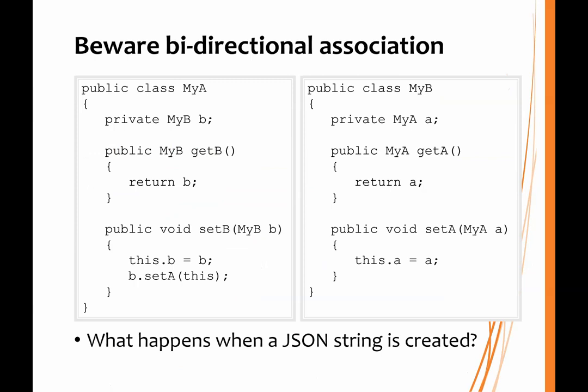When converting objects to a JSON string, what's happening in the background is that there is a JSON serializer — a piece of code that takes an object and serializes it, converting it into a JSON string. But when you have a bidirectional association, you get problems. Objects of class MyA have a reference to objects of class MyB, and in the MyB class there is another reference back to objects of class MyA. So if you have an object A and an object B, object A has a reference to B and object B has a reference back to A — a cyclic association.